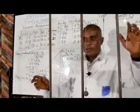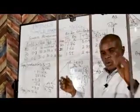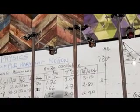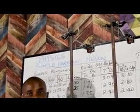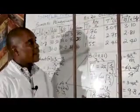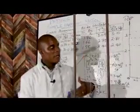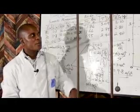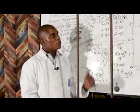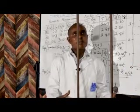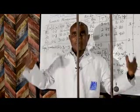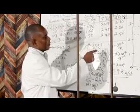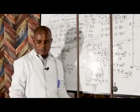We have now verified all the laws. The period is independent of the amplitude and independent of the mass, but dependent greatly on the length. Now, a question for you: if I take this pendulum to a place where there is no gravity, what will happen to the period? Remember the formula — try to think about it.